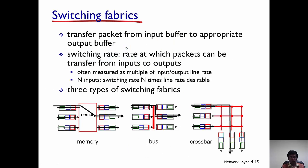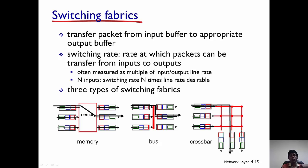Once the lookup has been done and the corresponding output port has been determined, the packet has to be transferred from the input port to the corresponding output port. This act of forwarding the packet from the input port to the output port is the goal of the switching fabric. There are many types of switching fabric: memory-based, bus-based, and crossbar switching fabric.